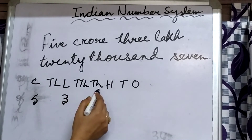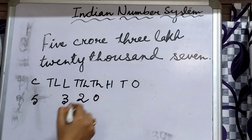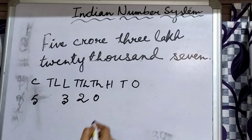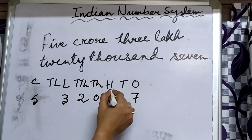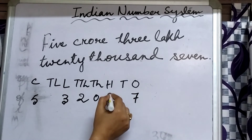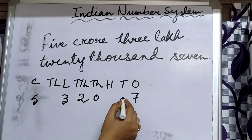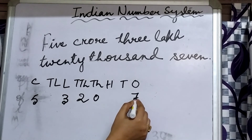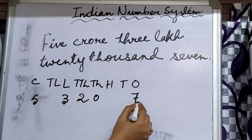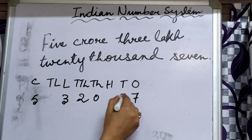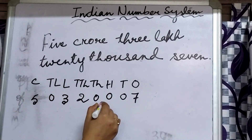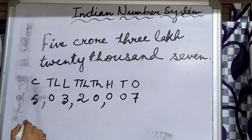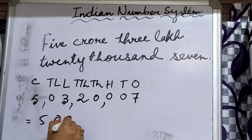Seven is in the ones place — if we write seven in the hundreds place it becomes seven hundred, and in tens place it becomes seventy. So we write seven in the ones place. The places where there is no number, we add zero. Let's put commas, so the number has become like this.